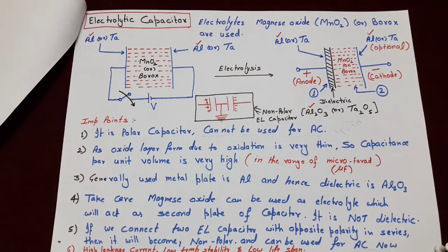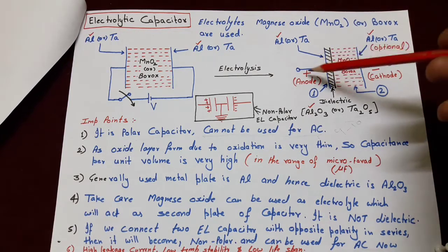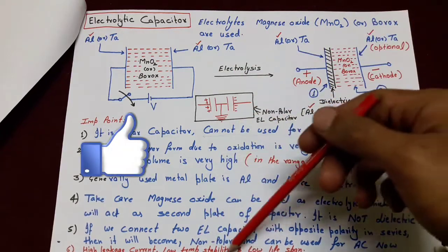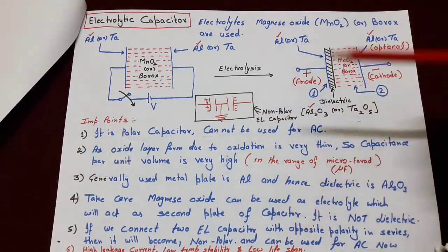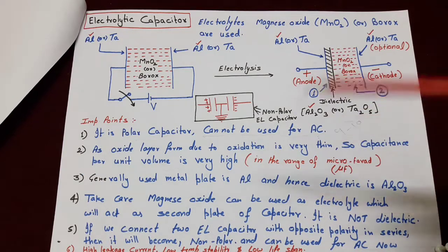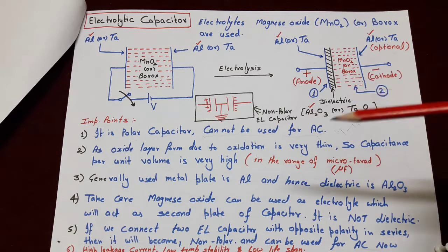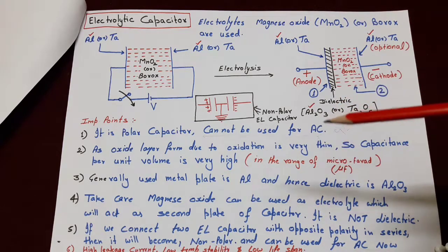Finally, jo yahan par dhyan rakhne wali baat hai wo hai iske drawbacks: electrolytic capacitor mein leakage current jyada rehta hai kyunki jo dielectric ki thickness hai wo bahut kam hai aur uski wajah se leakage current jyada rahega. Aur iski temperature stability aur life span bhi kaafi kam hota hai. To dosto, yeh tha electrolytic capacitor ke baare mein. Next lecture mein hum start karenge dielectric in AC field. Milte hain next video mein — goodbye aur video ko pura dekhne ke liye dhanyawad.